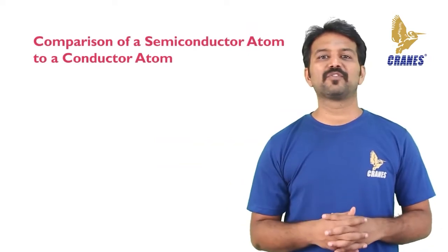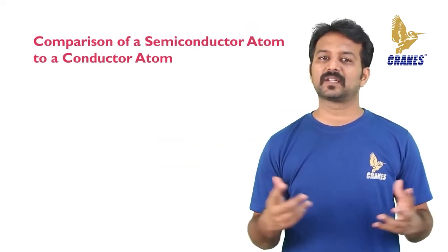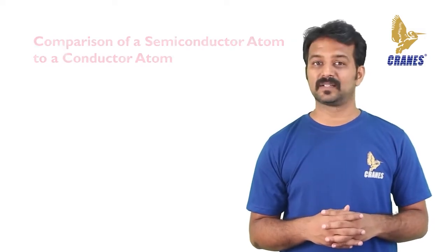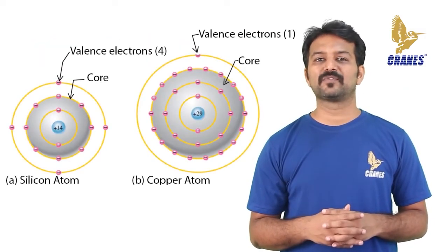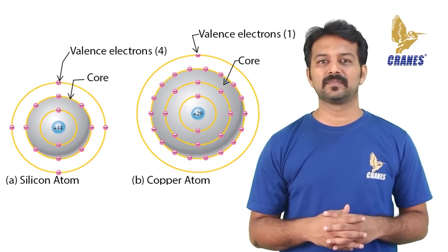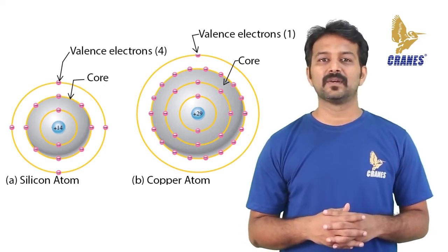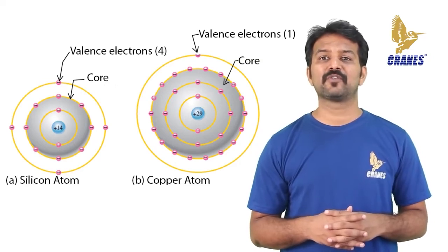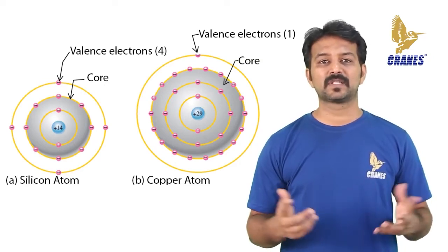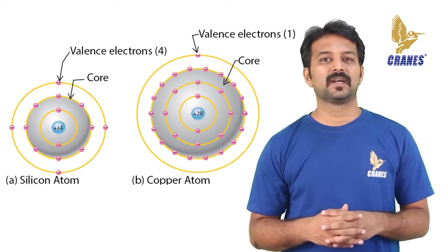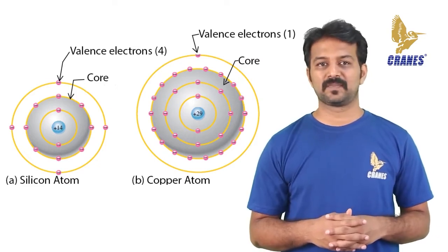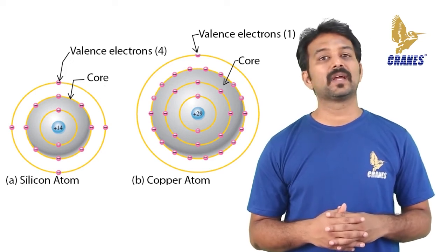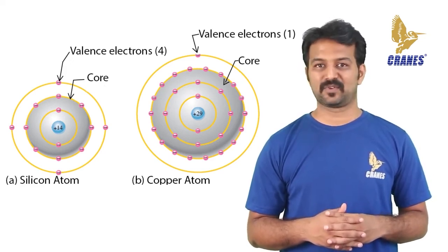So, comparison of a semiconductor atom to a conductor atom. Silicon is a semiconductor and copper is a conductor. Bohr diagrams of the silicon atom and the copper atom can be seen. Notice that the core of the silicon atom has a net charge of plus 4, which means 14 protons and 10 electrons, and the core of the copper atom has a net charge of plus 1, 29 protons and 28 electrons.